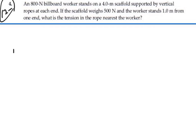Let's see what we have here. We've got our scaffolding. It's 4 meters long, and in the middle is where we think its weight is acting. The scaffolding itself weighs 500 Newtons. We'll have a tension at one end, let's call it tension 1, and we have a tension at the other end, tension 2.